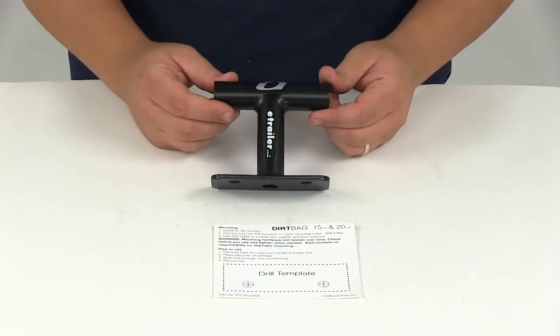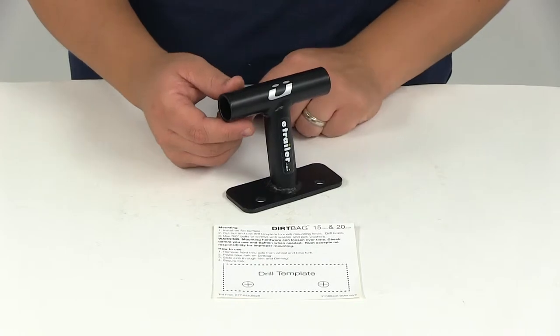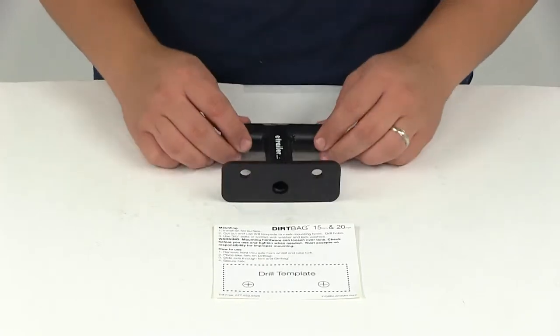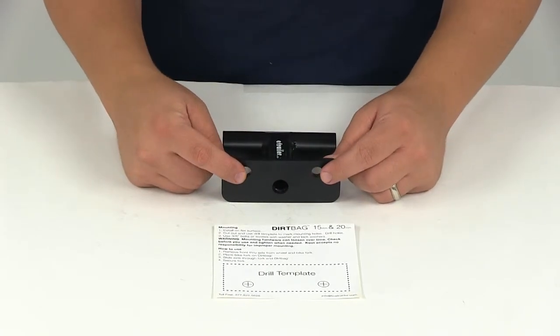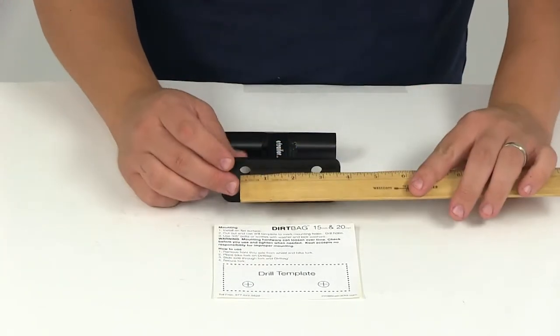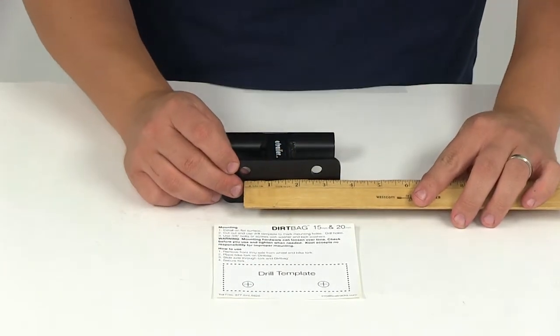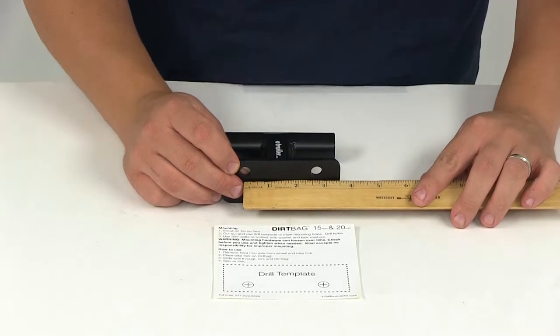This versatile fork block mounts to almost any flat surface such as a truck bed, trailer, or cargo carrier. The base has two holes for easy installation. The distance from center to center of each hole is 2 and 5/8 inches.